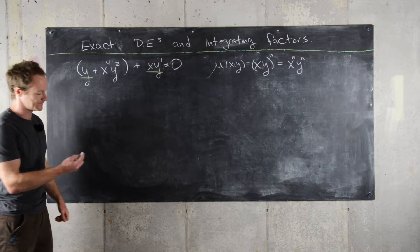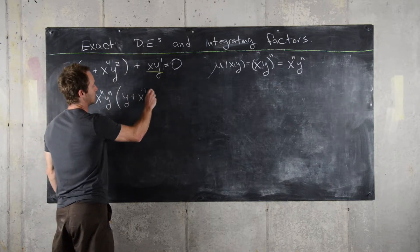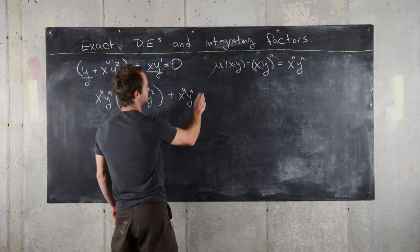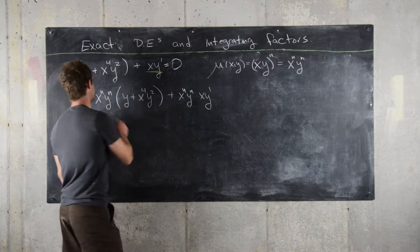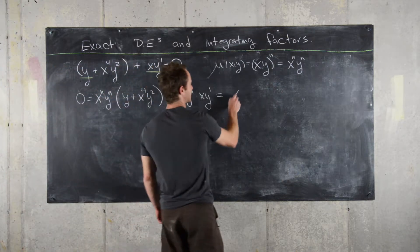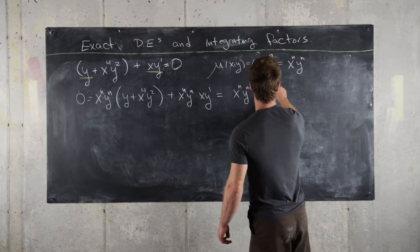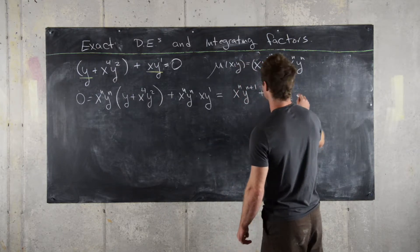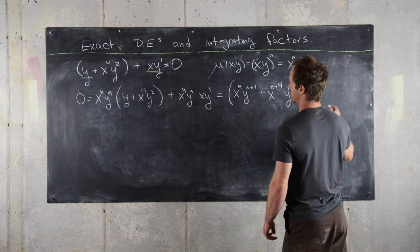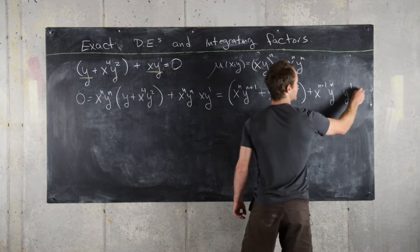Multiplying the differential equation by μ = x^n·y^n gives: x^n·y^n·(y + x⁴y²) + x^n·y^n·x·y' = 0. Expanding, that is: x^n·y^(n+1) + x^(n+4)·y^(n+2) + x^(n+1)·y^n·y' = 0. This is our new differential equation.